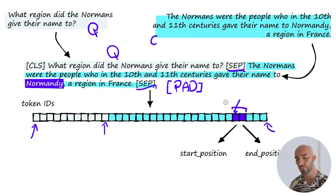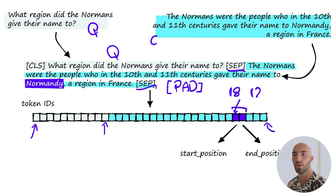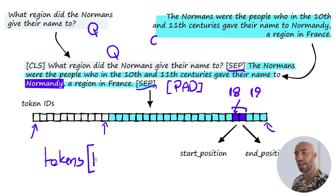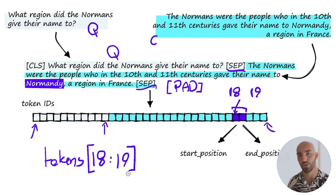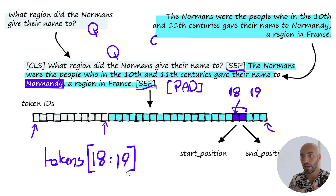When passing start and end positions, we pass token indices — for example, 'Normandy' might be token number 18 and its end at position 19. So if we index our token IDs list from 18 to 19, that gives us just the single token representing 'Normandy'. That's how the tokenization process works.